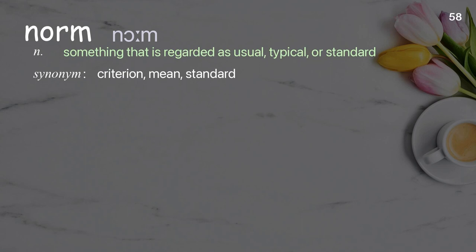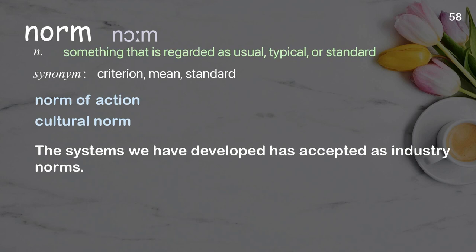Norm: something that is regarded as usual, typical, or standard. Examples: norm of action; cultural norm; the systems we have developed have been accepted as industry norms.